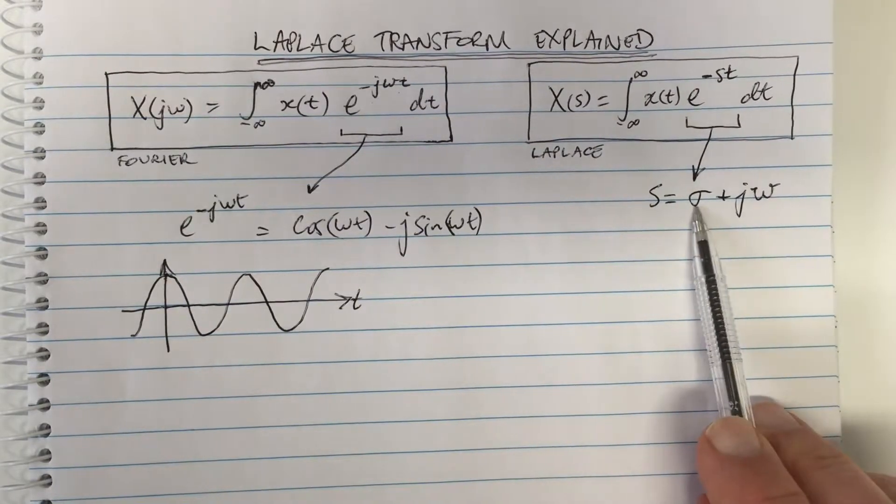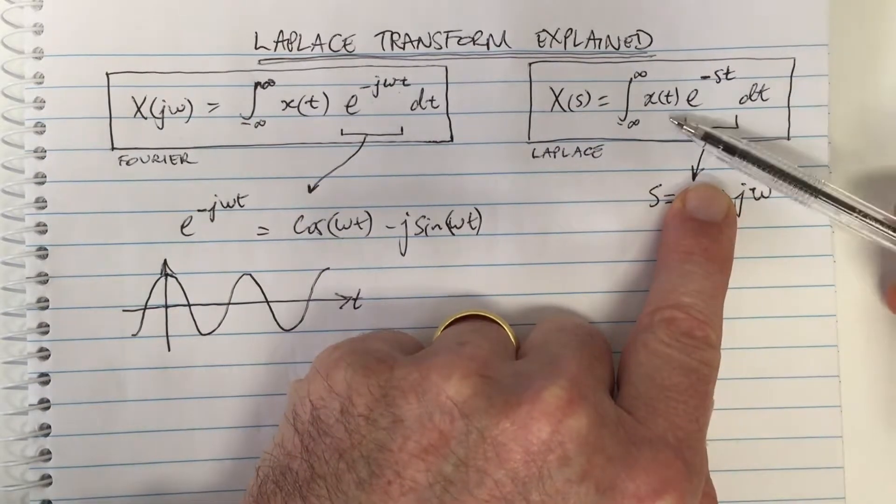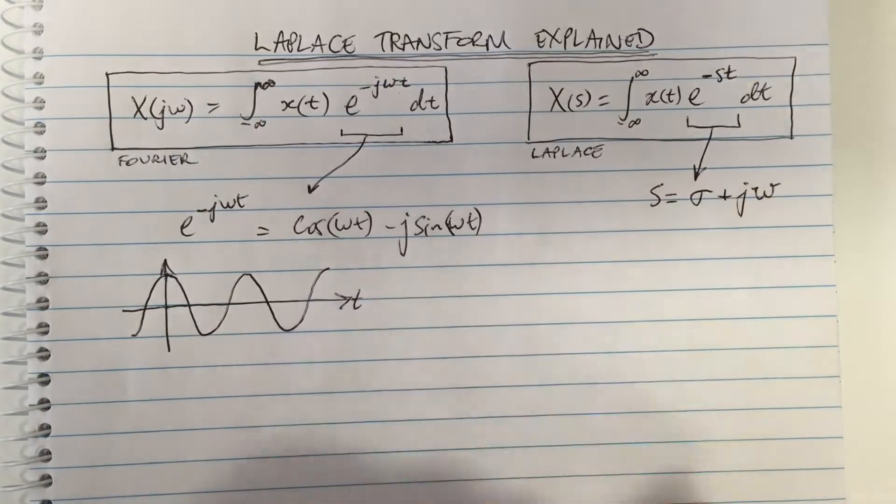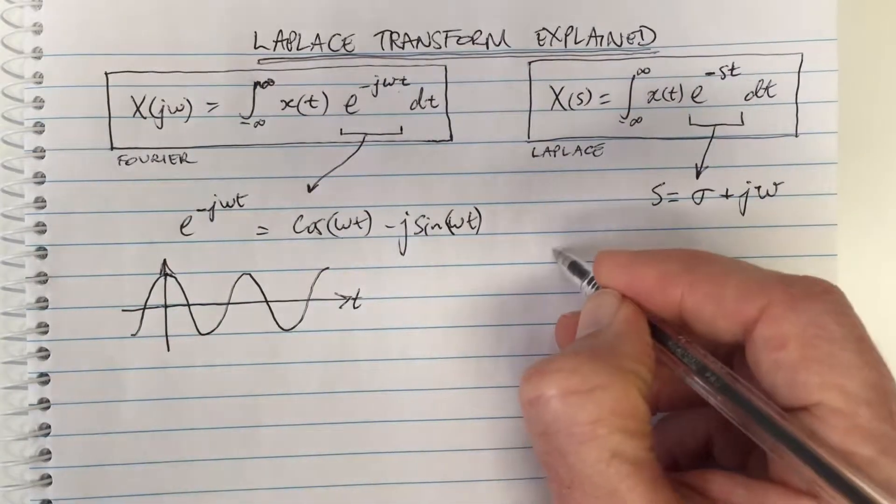If σ equals zero, then the Laplace transform is the Fourier transform, and this allows us to have a bigger class of functions. So what do I mean by this?